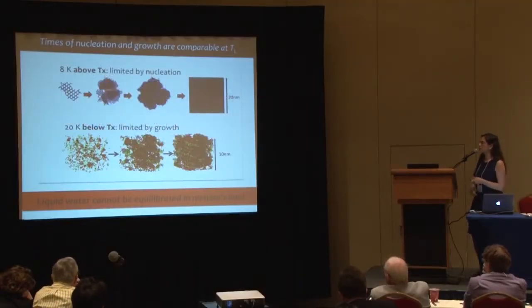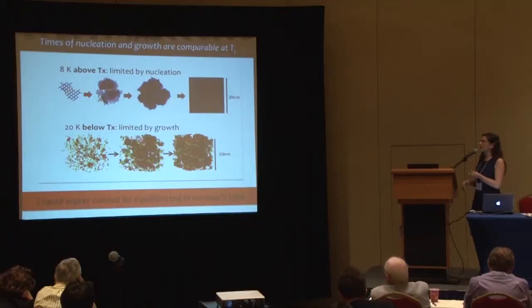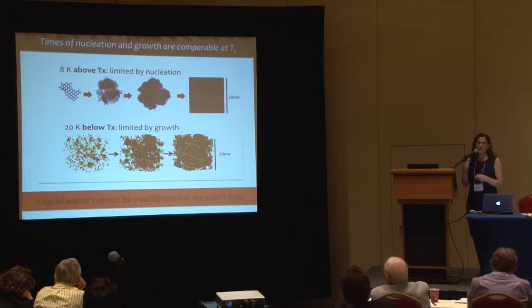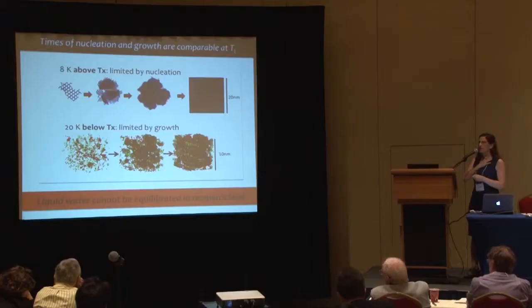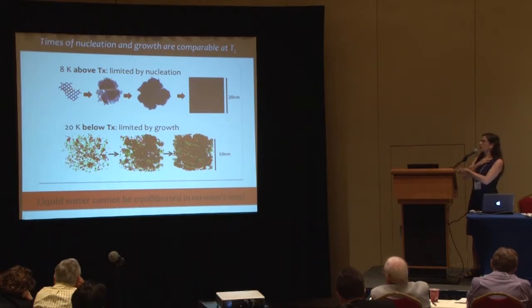At temperatures slightly above the maximum crystallization rate, a single nucleus grows into a very complicated structure with stacking faults. Below the temperature of maximum crystallization rate — in the region called 'no man's land' inaccessible in the liquid state experimentally — many nuclei form immediately and compete against each other, annealing into a crystallized structure. It's a completely different mechanism of growth and nucleation on the two sides. As the timescale for liquid water equilibration becomes comparable to crystallization, liquid water cannot be equilibrated in the no man's land region.